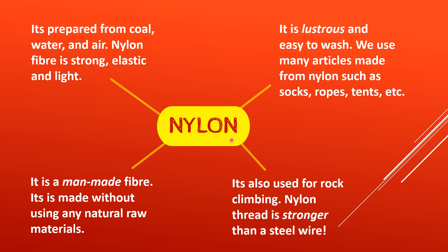The next synthetic fiber is Nylon. Nylon is a man-made fiber and it is made without using any natural raw materials. Unlike rayon, which comes from wood pulp — a natural resource — nylon is a completely synthetic fiber. It does not come from any plant or animal part. It is a fully synthetic fiber and is prepared from coal, water, and air.